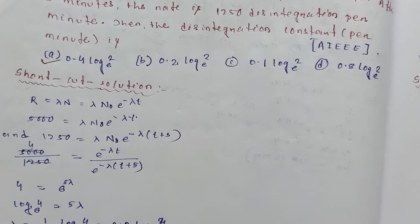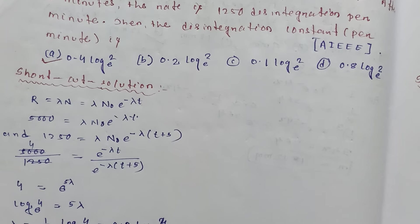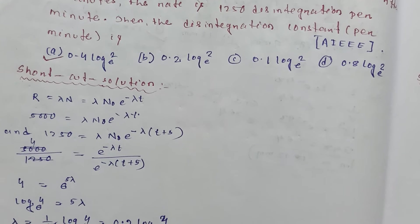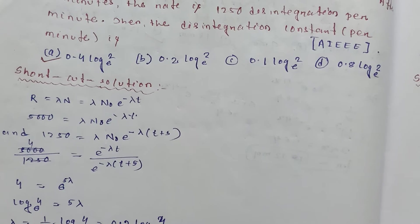Another equation: R equals 1250. Similarly, after 5 minutes at time t plus 5, dividing the equations we get